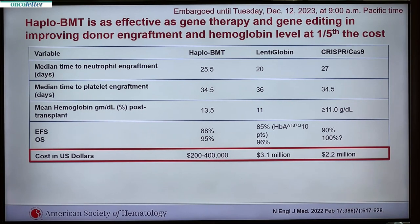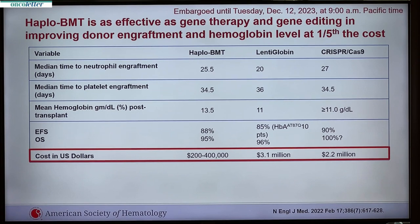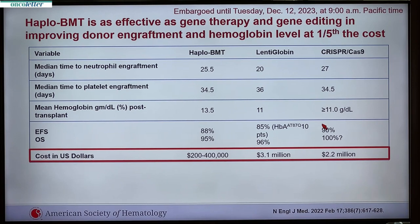Haploidentical bone marrow transplant is as effective as gene therapy and gene editing in improving donor engraftment. The median time to neutrophil engraftment — even using other donor cells — is about the same period; platelet engraftment is also the same. In sickle cell disease, which is characterized by chronic anemia, most patients receiving new stem cells achieve hemoglobin of about 13.5 to 14 grams. Patients with lenti-globin and CRISPR are around 11 grams. Whether that holds over time remains to be seen as follow-up is still short. What is critically important to me is the cost.